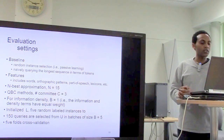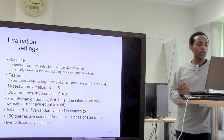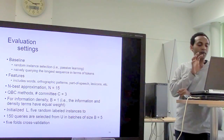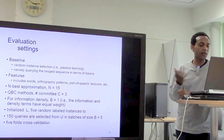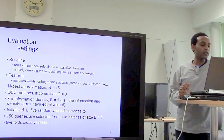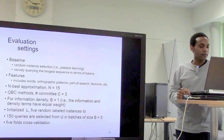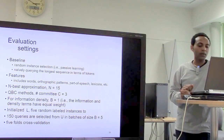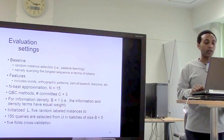For information density, beta was set to one, giving the density and informativeness components equal weight. The initialized labeled set contains five random labeled instances, and 150 queries are selected from the unlabeled dataset in batches of five. Five-fold cross-validation was used for all experiments.